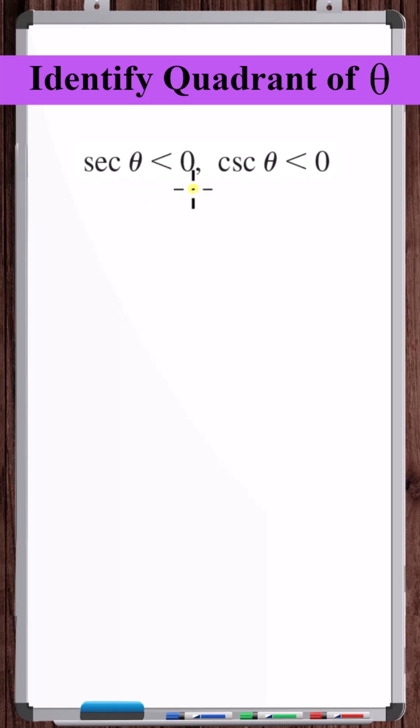If the secant of an angle is negative and the cosecant of that same angle is negative, then what quadrant or quadrants must the angle be in?